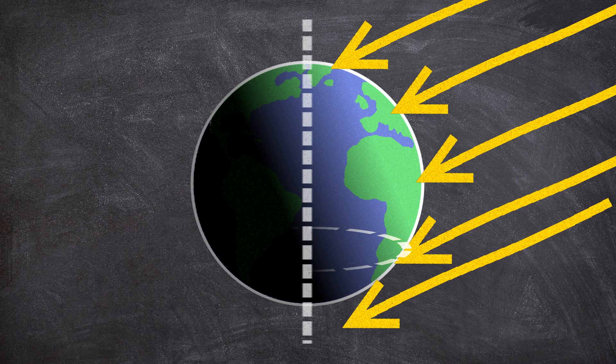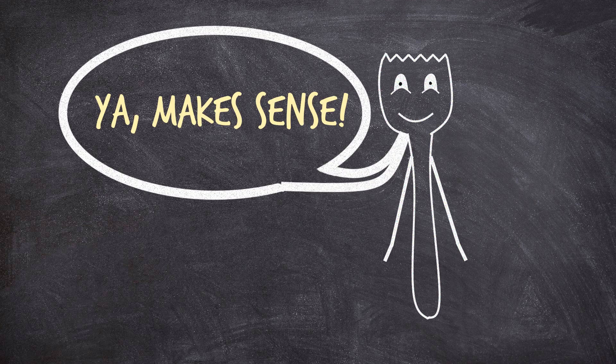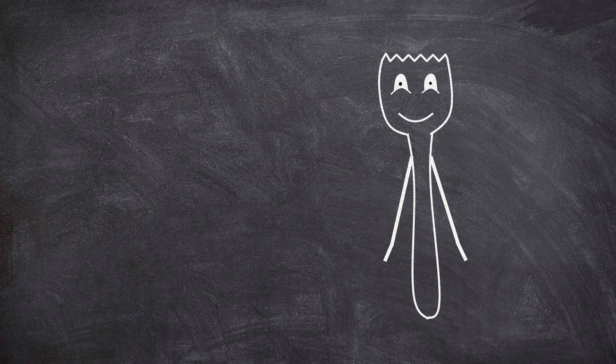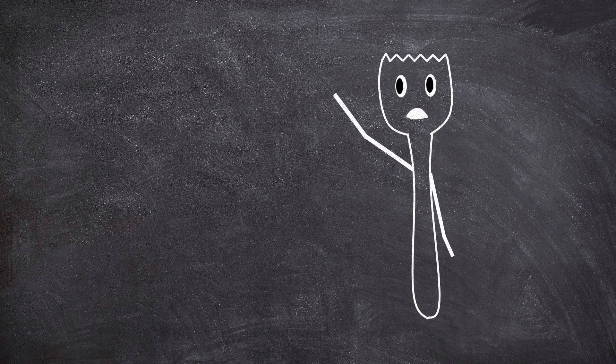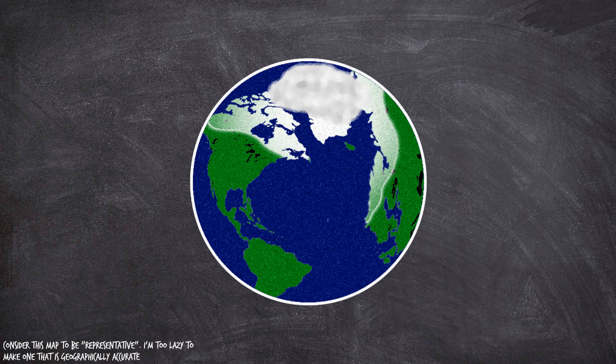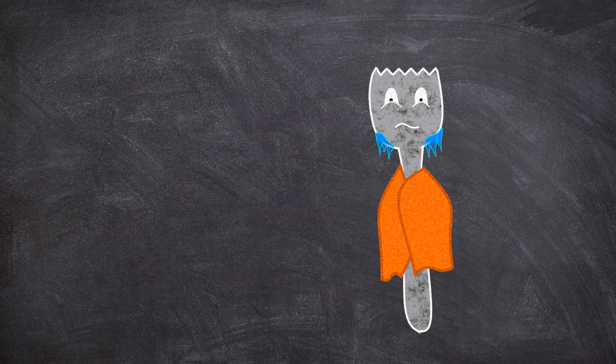So unlike the perihelion aphelion thing, at a surface level, it definitely seems quite plausible that this is the main reason for what makes summers so hot. But again, if you think about it a bit, it does fall apart pretty quickly. I mean, by this logic, shouldn't the place with the longest days have the hottest summers? Well, the place with the longest days are the Arctic and Antarctic, which are definitely not known for their toasty summers.